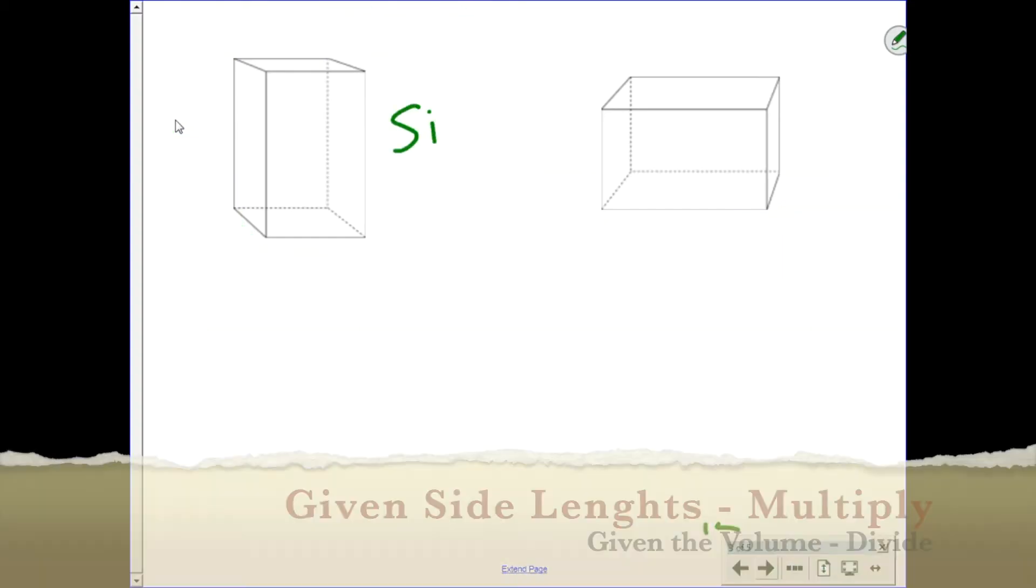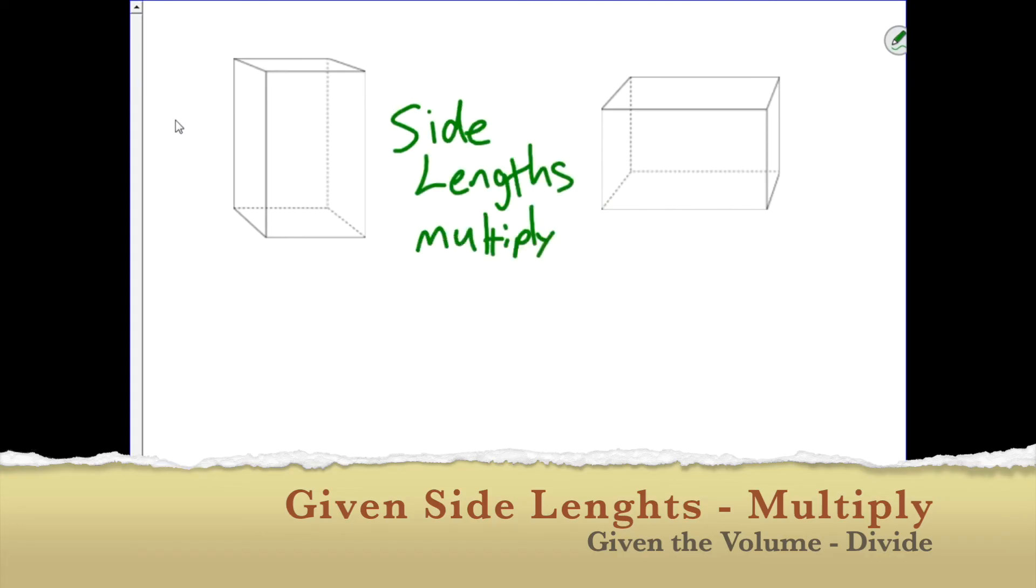So to reiterate, if you're given the side lengths, you multiply. If you're given the volume, you're going to end up dividing.